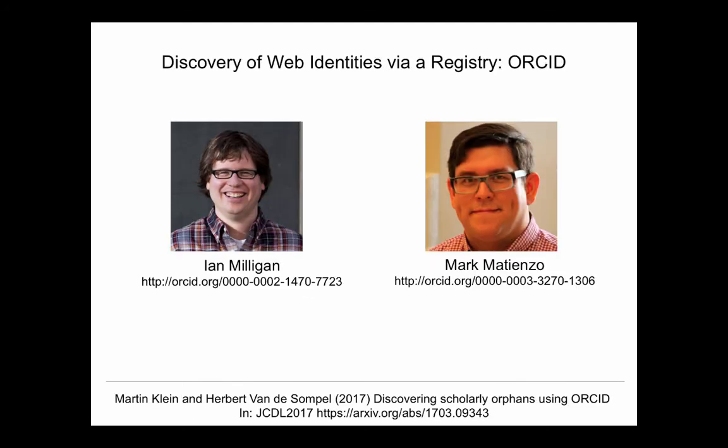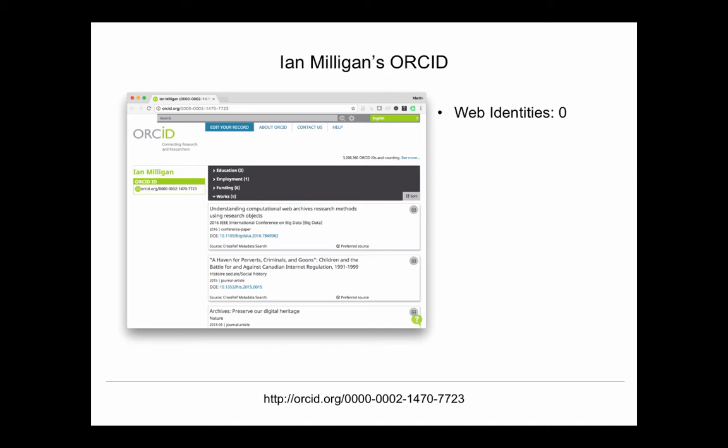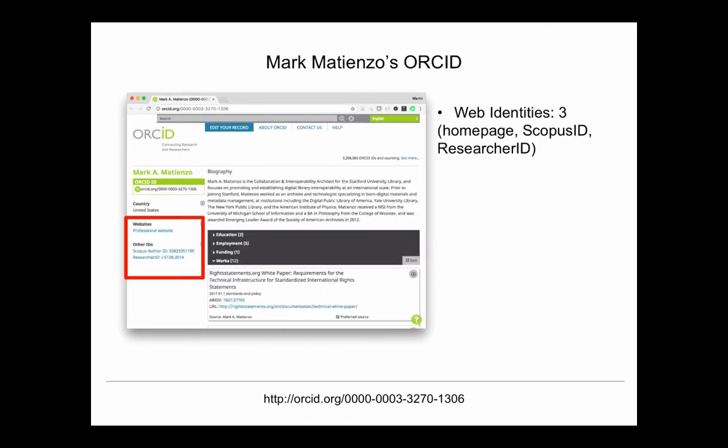Our current approach focuses on registries. The first registry that may come to mind for identifying web identities is ORCID. Taking our two sample researchers, Ian and Mark — both have an ORCID profile. If you look at Ian's ORCID profile, you'll see information about his education, employment history, some funding information, and some works — mostly published papers — but zero web identities. The left-hand side where they would usually occur is blank, with no references to identities in other scholarly portals.